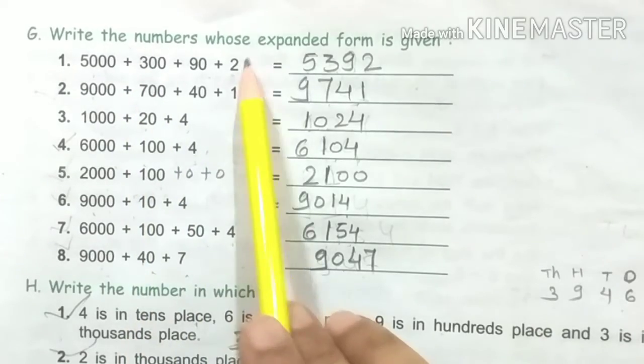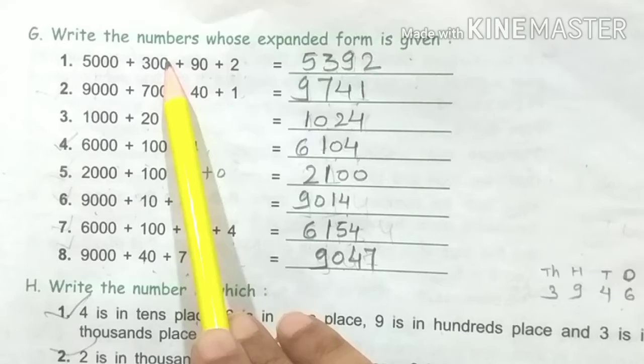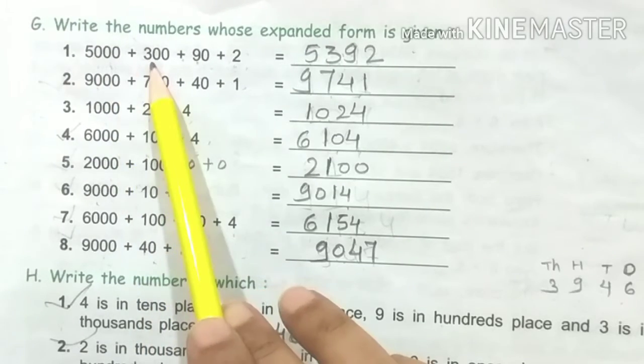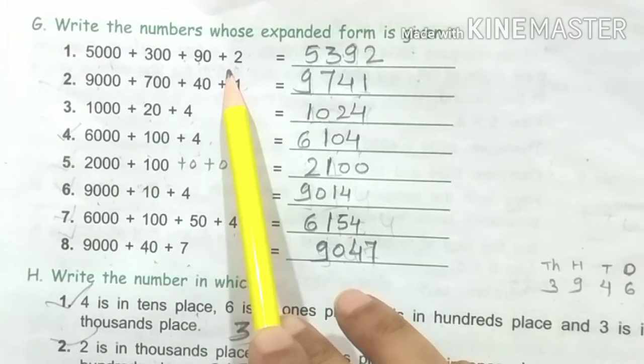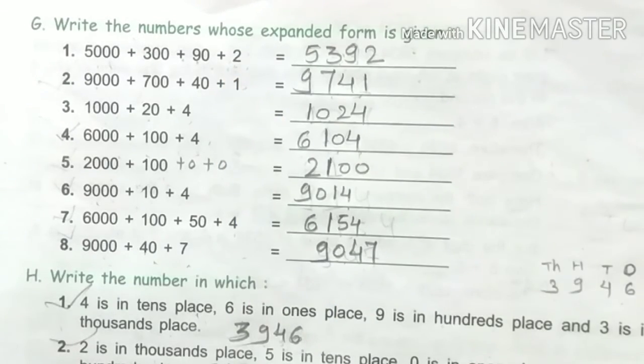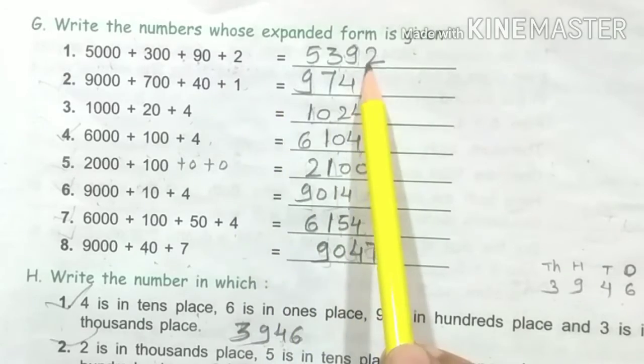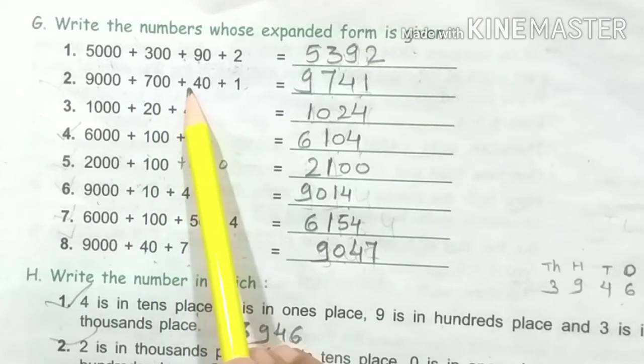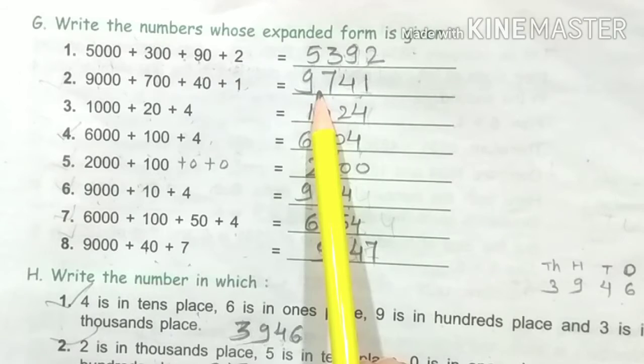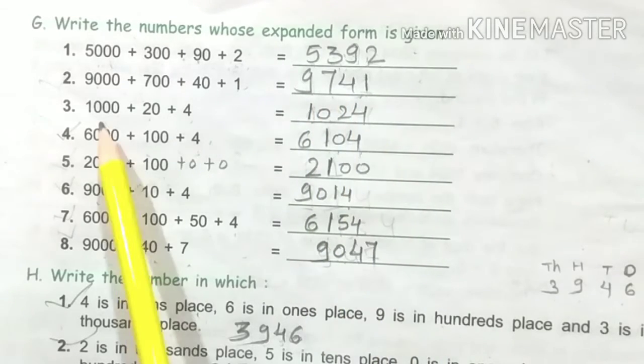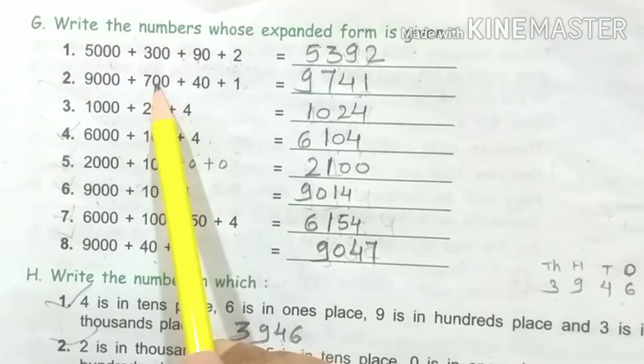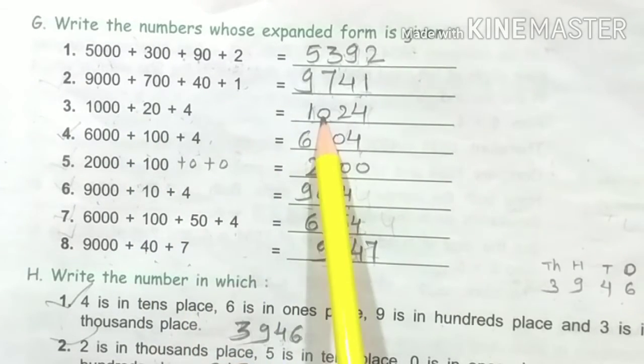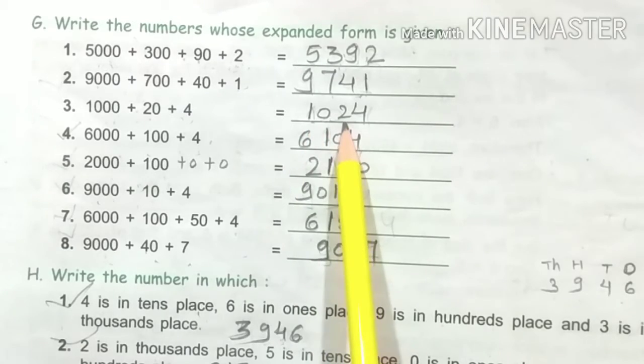Now, next question: write the numbers in standard form. 5000 plus 300 plus 90 plus 2 equals 5392. 9000 plus 700 plus 40 plus 1 equals 9741. 1000 plus 20 plus 4—here we have 100 which is missing, so we can write 0 here—equals 1024.